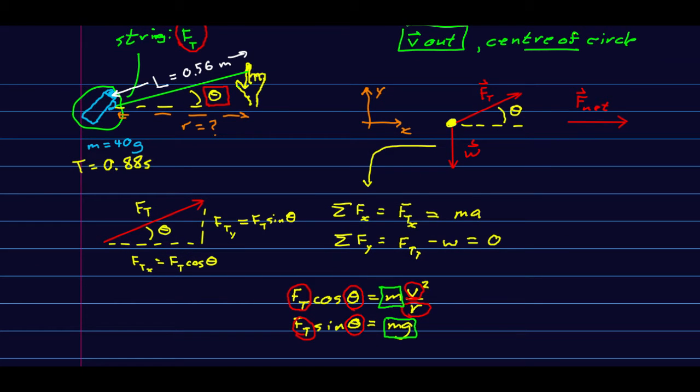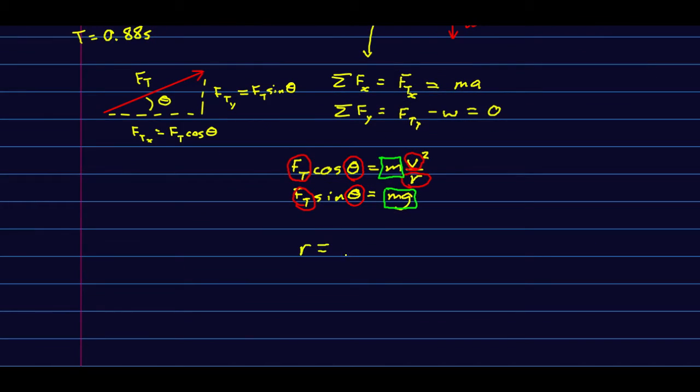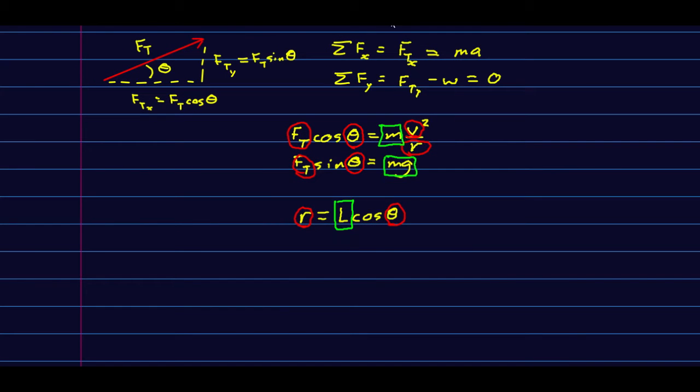If you just look at the diagram of the string you can see that you can get r straight from trigonometry: it is l cos(theta). So once again r is an unknown, theta is an unknown, but l is known. The other thing we can do is rewrite v as the circumference over the period, and we know the period. At that point we now have four unknowns but we have four equations, and so this is solvable.